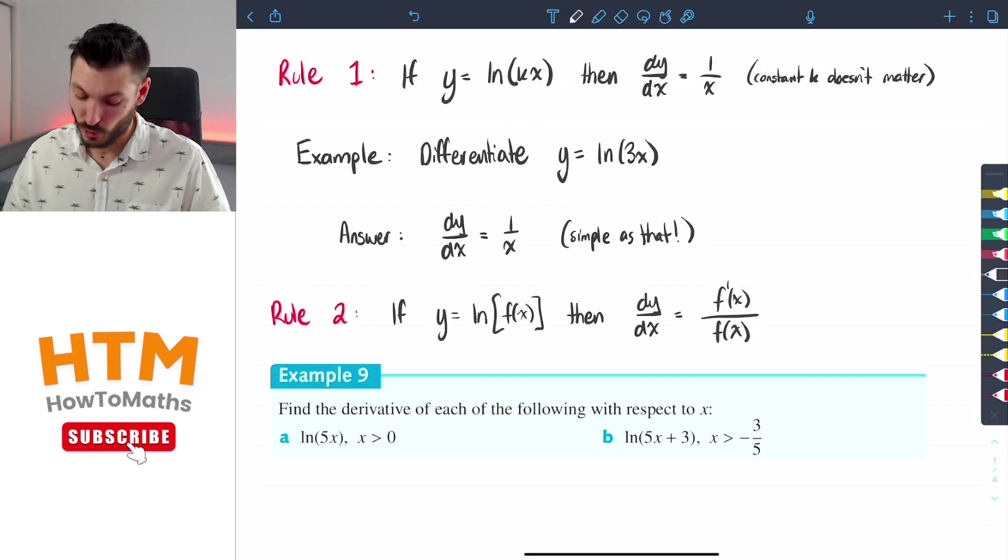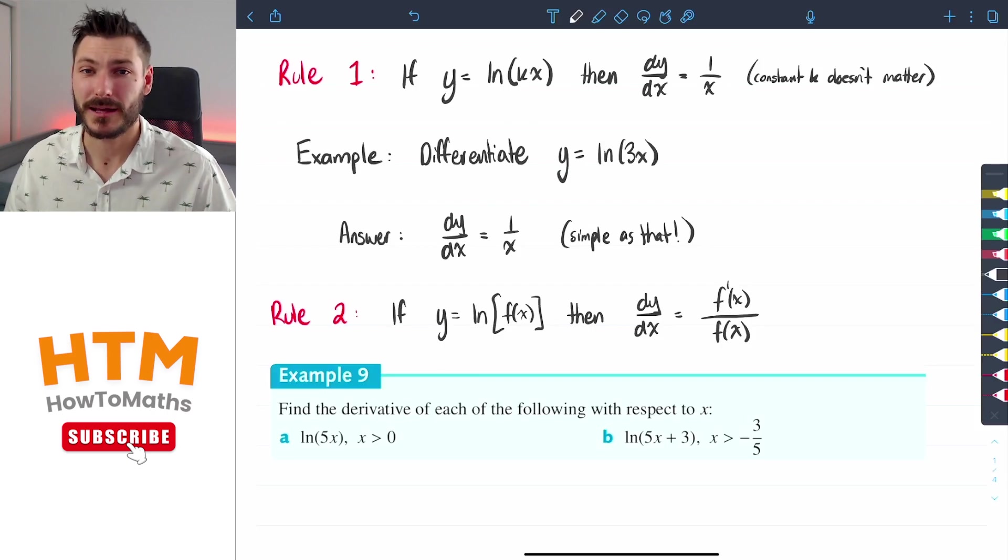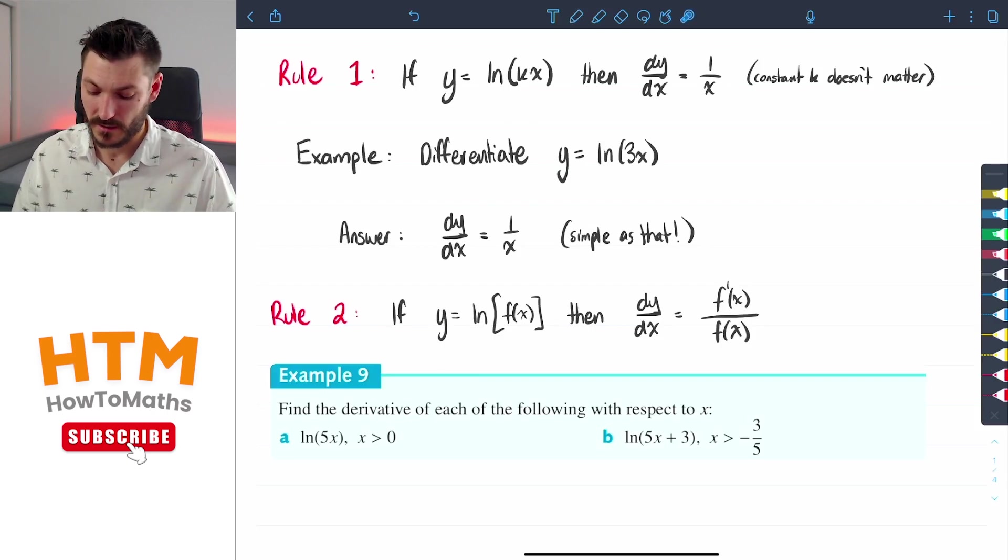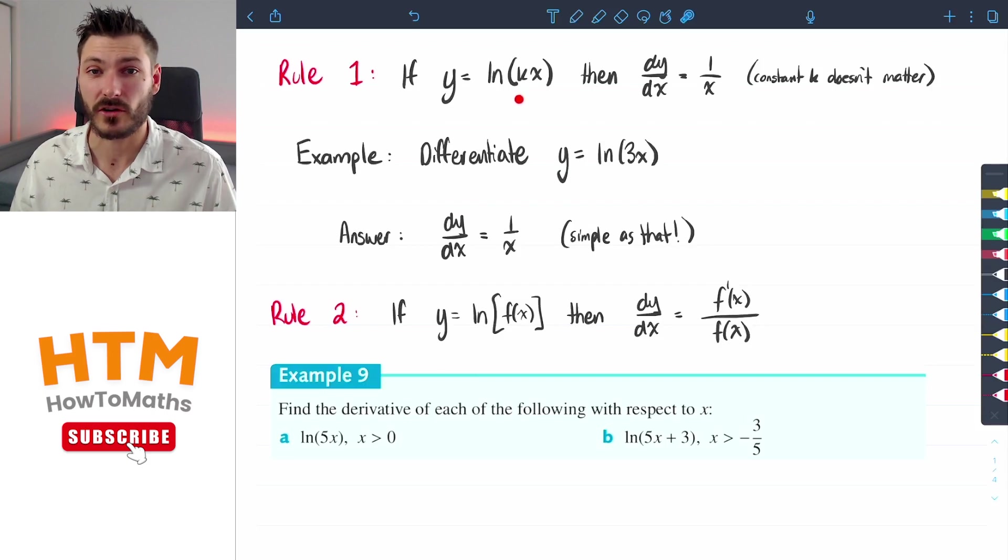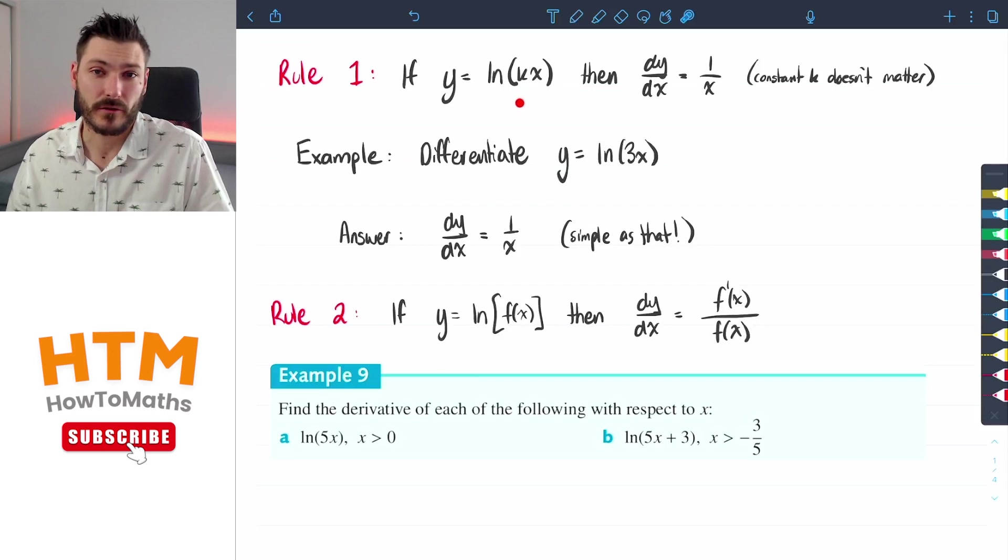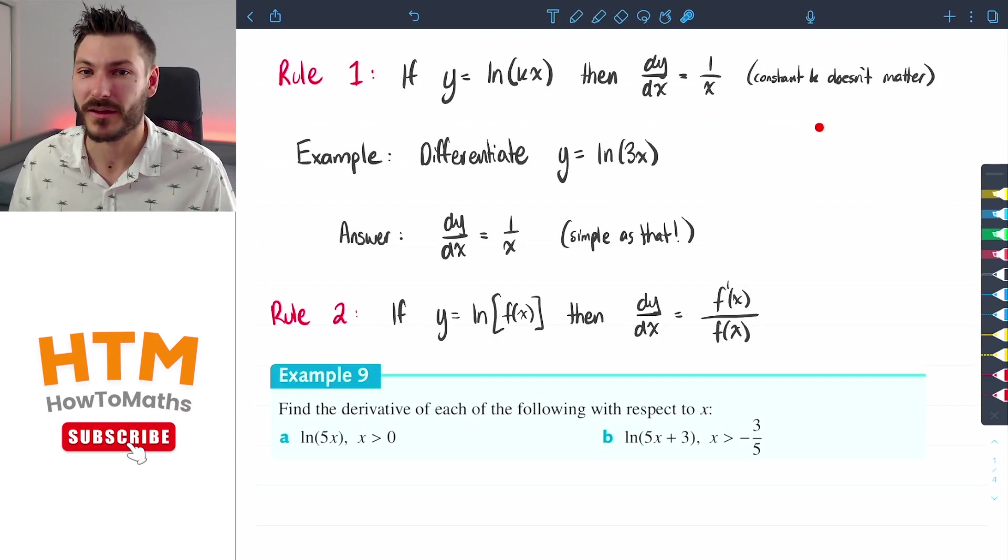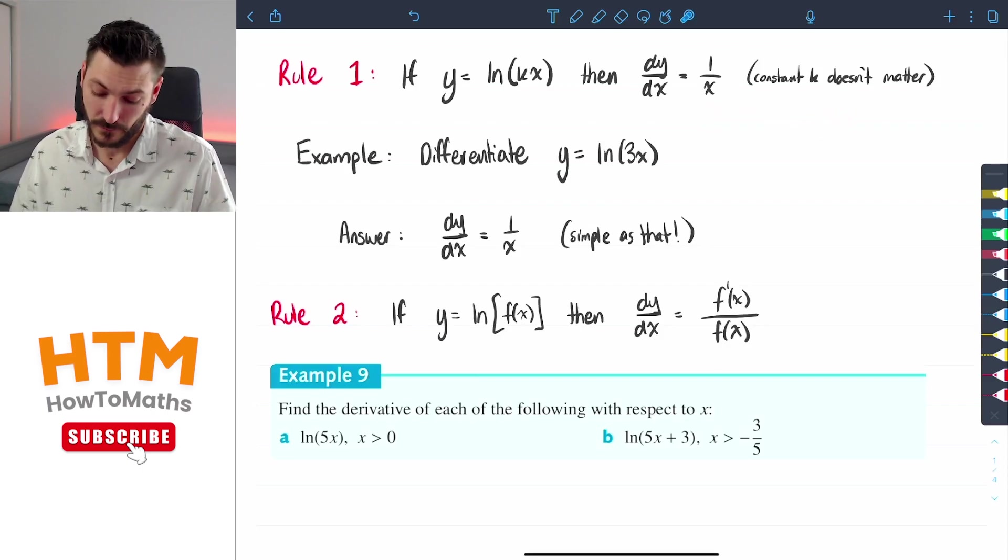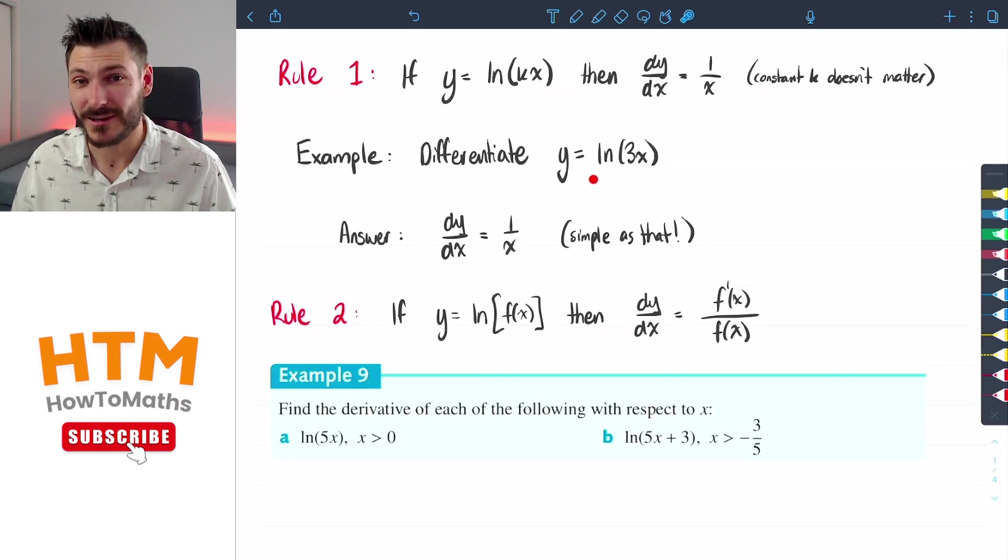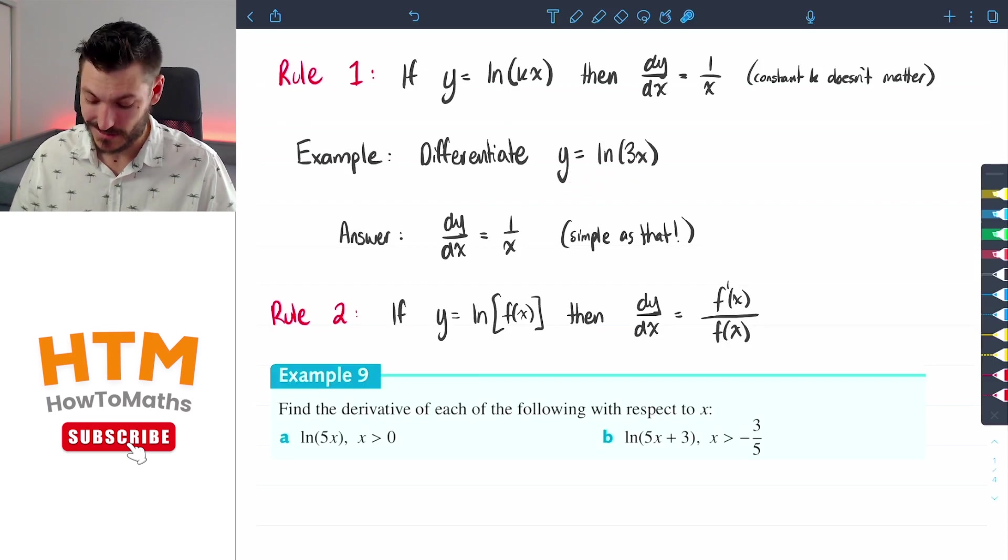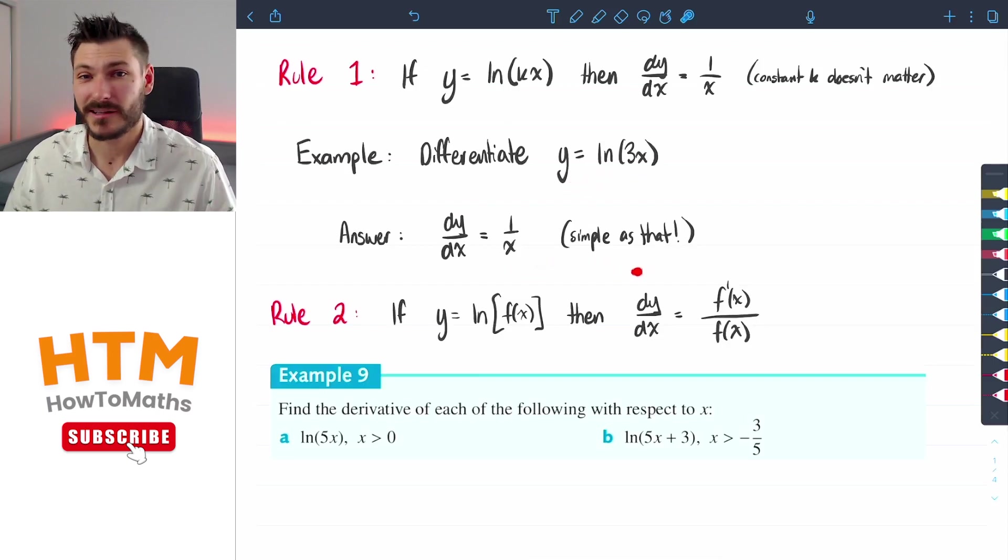So I've got two rules here. The first rule being that if you have y equals ln of kx where k is just a constant value, then the derivative of that function is always 1 over x. It doesn't matter what the k value is. For example, the derivative of y equals ln of 3x is just 1 over x. It really is as simple as that.